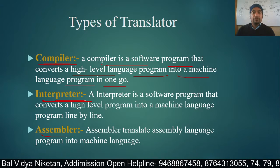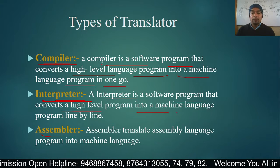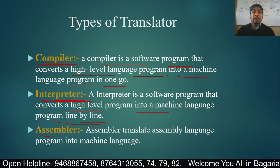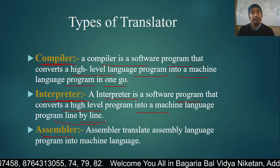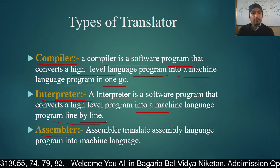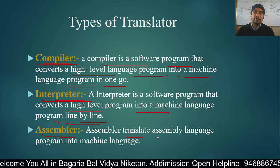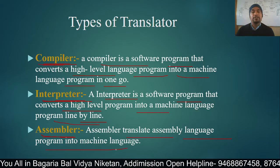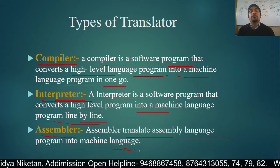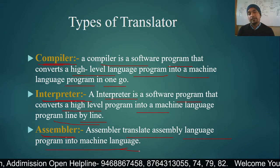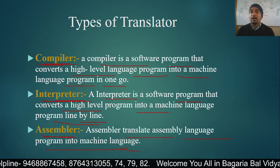An interpreter is a software program that converts high-level programs into machine language line-by-line. So the compiler translates the entire program at once, while the interpreter translates line-by-line. An assembler translates assembly language programs into machine language — specifically, it converts assembly language code into machine code.